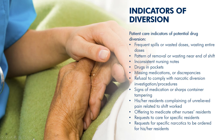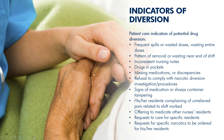Patient care indicators of potential drug diversion include frequent spills or wasted doses, or wasting entire doses, a pattern of removal or wasting near the end of a shift, inconsistency in nursing notes, drugs in pockets, missing medications or discrepancies, refusal to comply with narcotic diversion investigations or procedures, signs of medication or sharps container tampering or storage facility tampering, residents complaining of unrelieved pain related to the shift worked, offering to medicate other nurses' residents or requests to care for specific residents, and any requests for specific narcotics to be ordered for his or her residents.